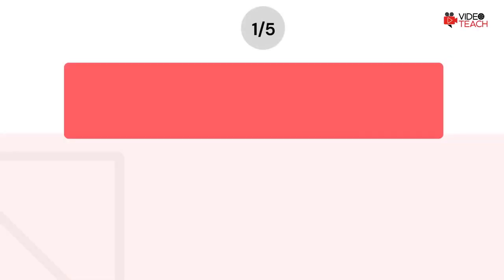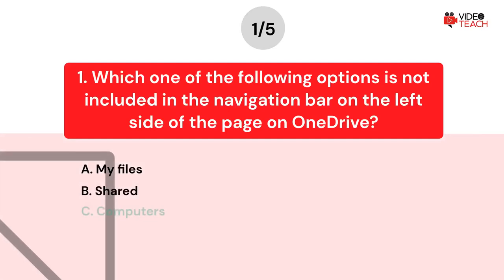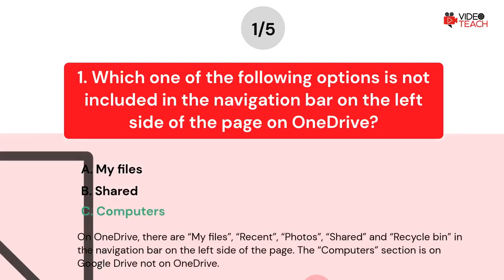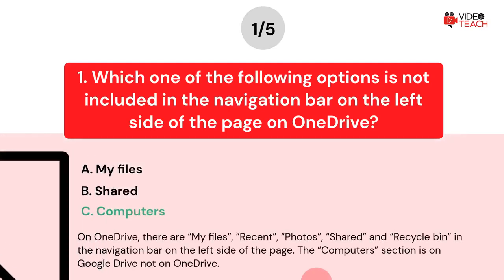The correct answer is Option C. On OneDrive, there are My Files, Recent, Photos, Shared, and Recycle Bin in the navigation bar on the left side of the page. The Computers section is on Google Drive, not on OneDrive.